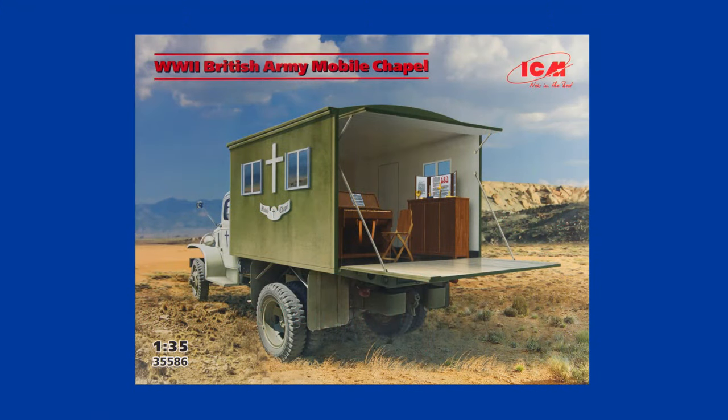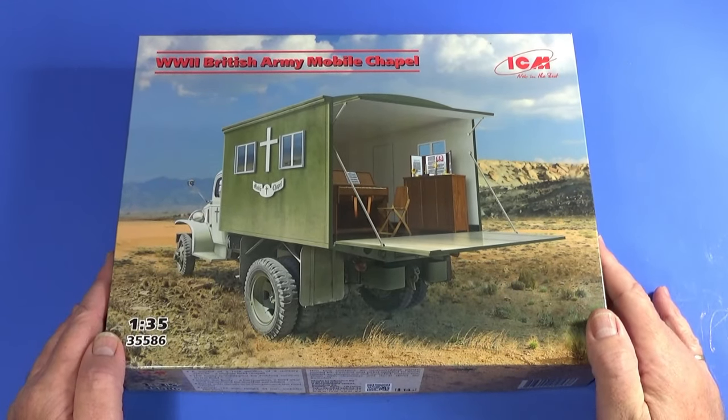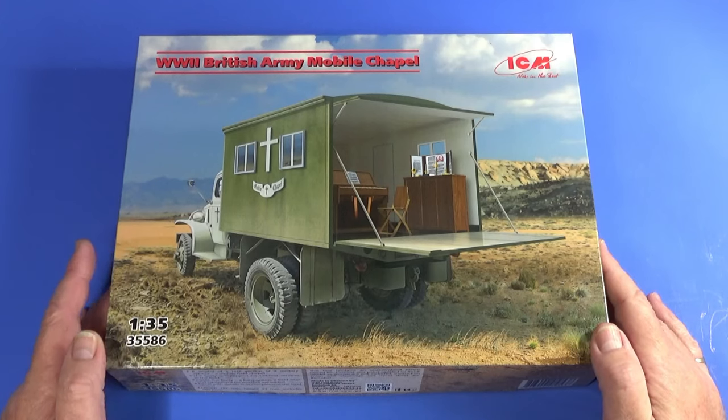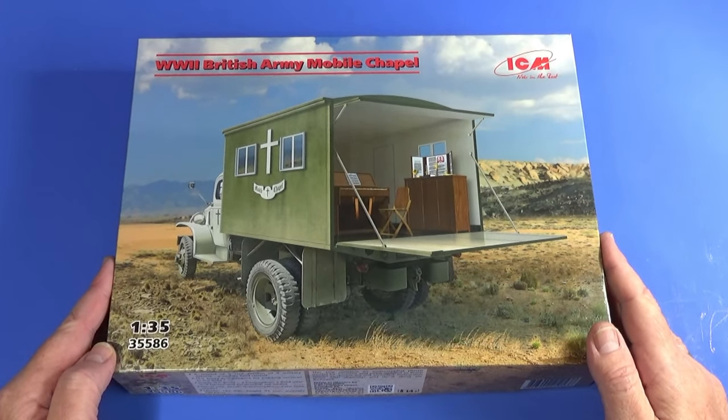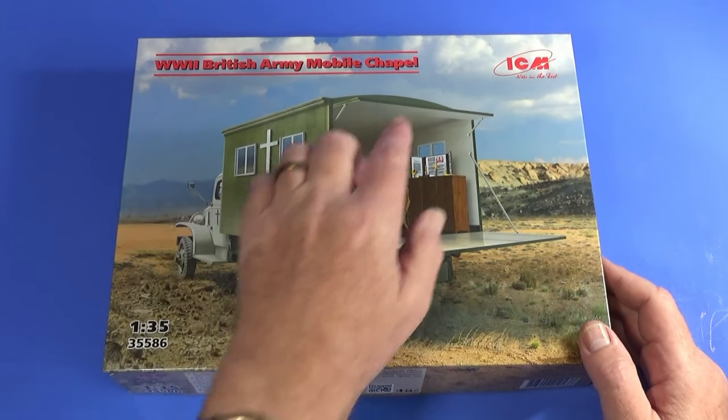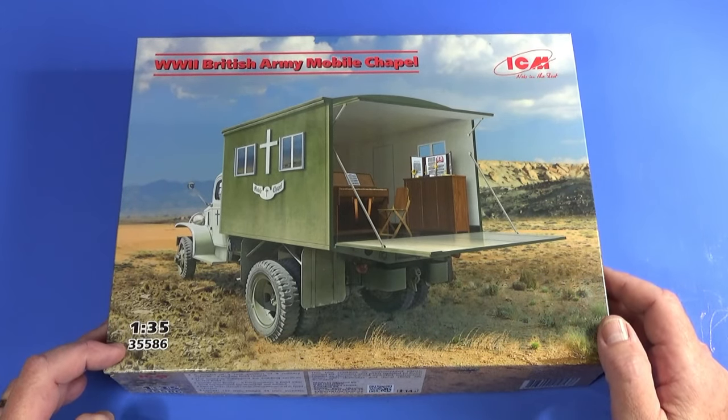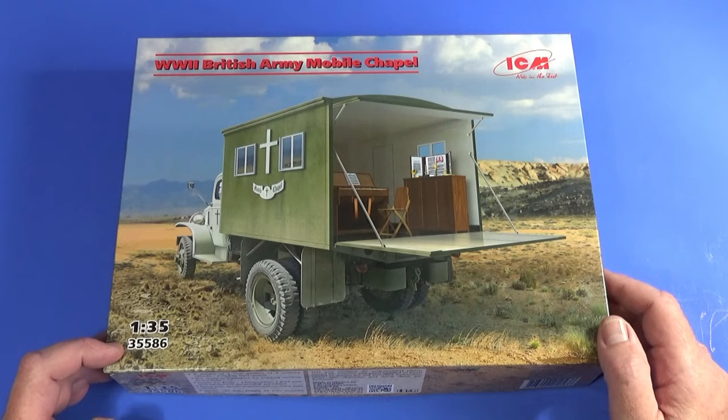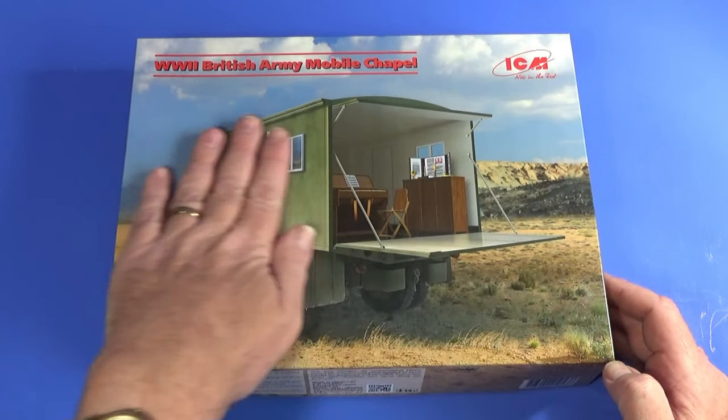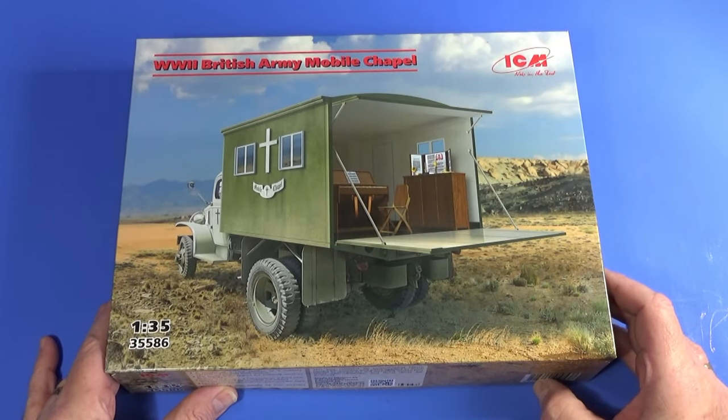So let's have a look at what you get for your money in the British Army Mobile Chapel in 1:35 scale from ICM. Here we have it, one of the stranger kits I've seen of a vehicle, but it could be quite interesting to build. It's a World War II British Army Mobile Chapel made by ICM in 1:35 scale, product code 35586. It has a piece of box art depicting this, I'm guessing in North Africa or Southern Italy.